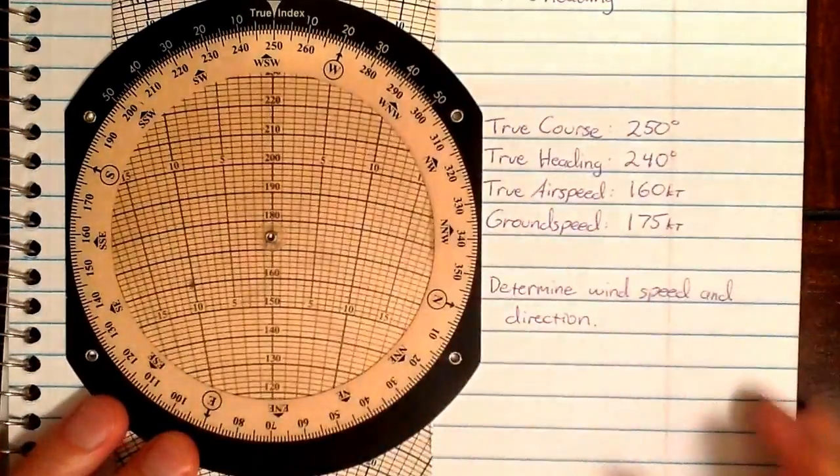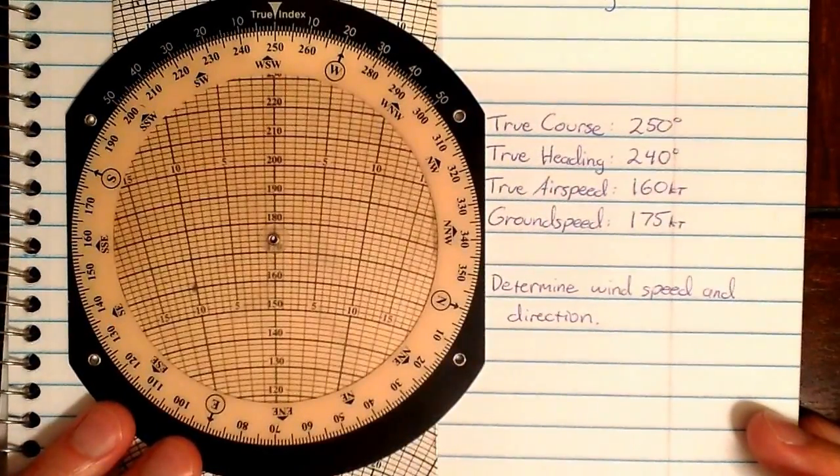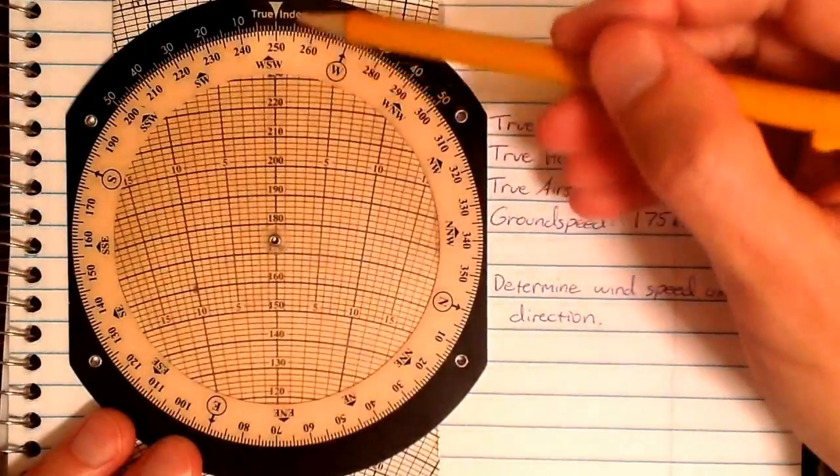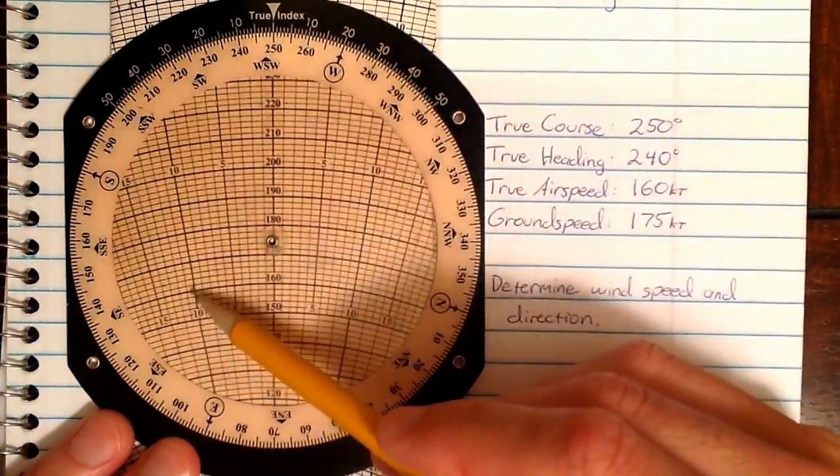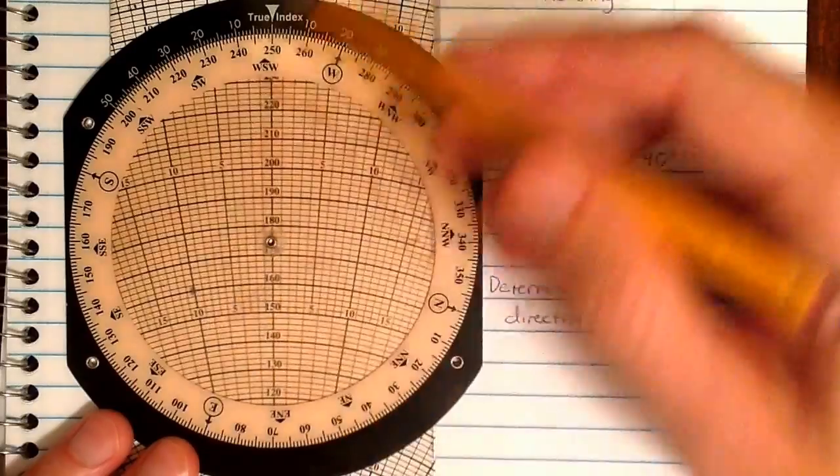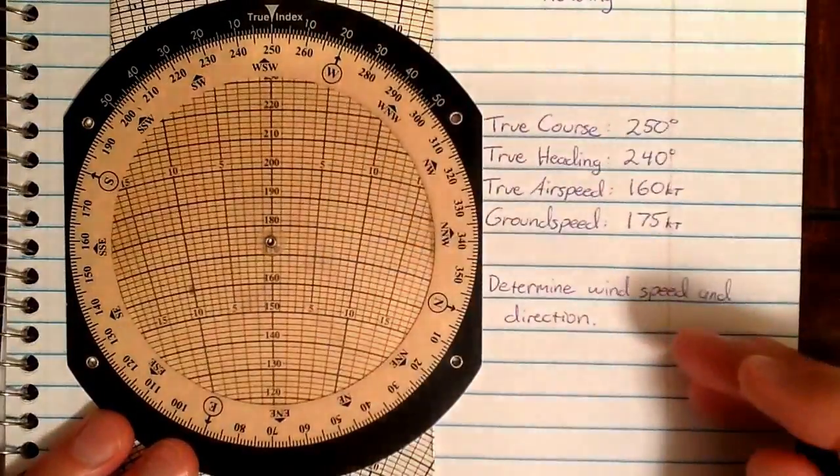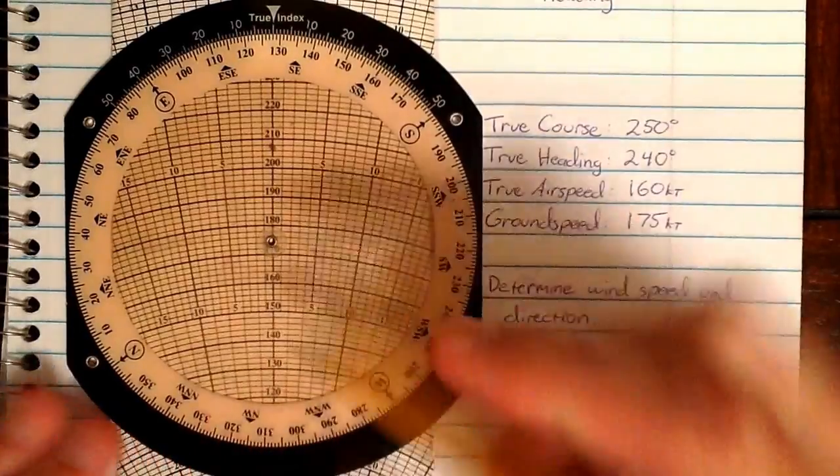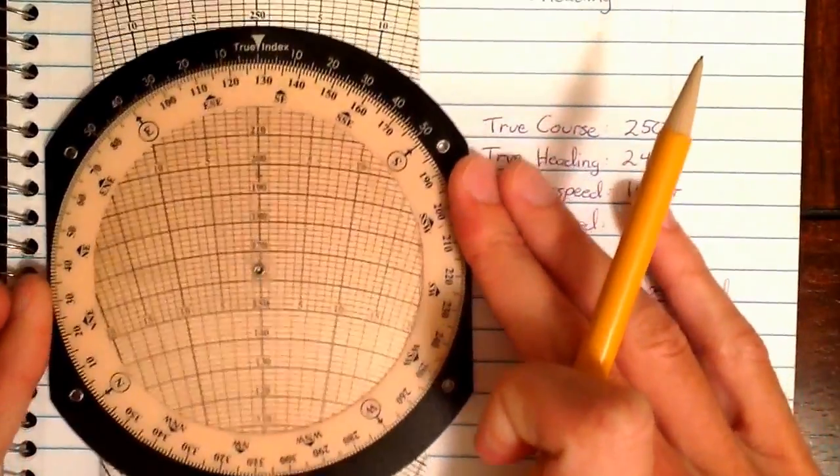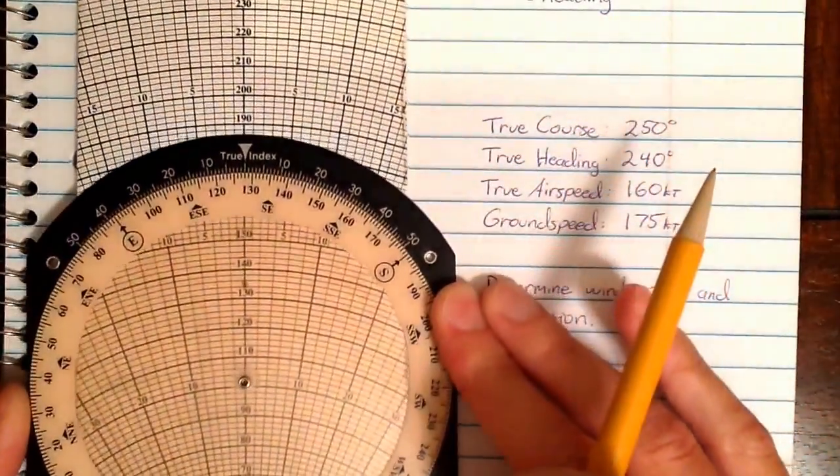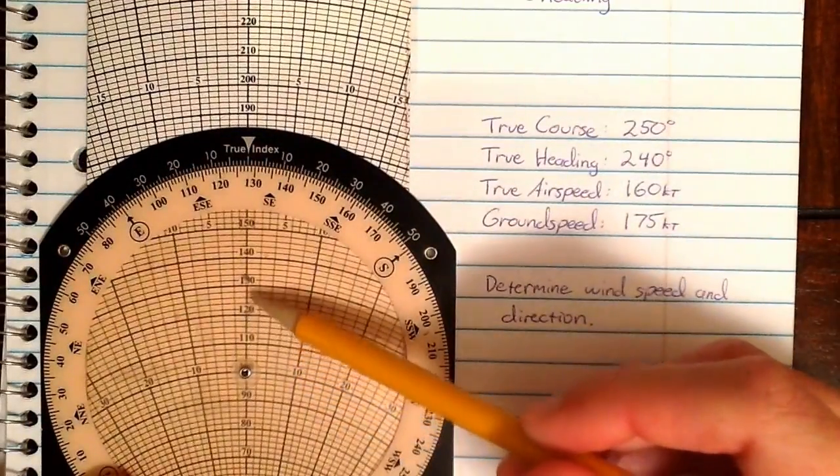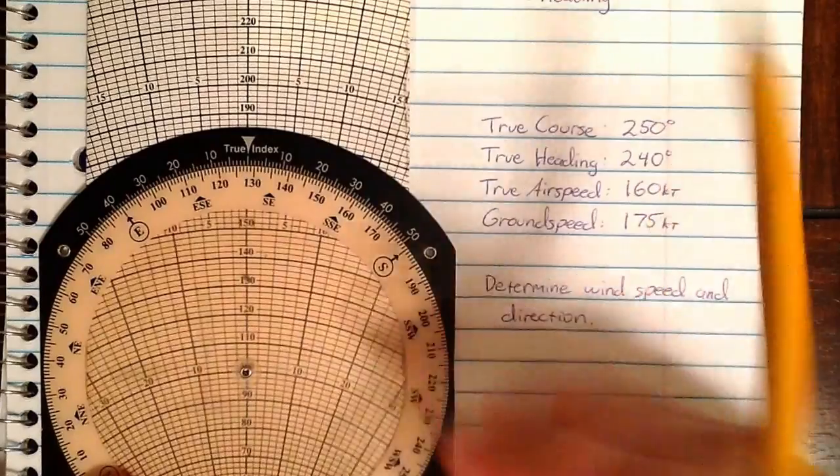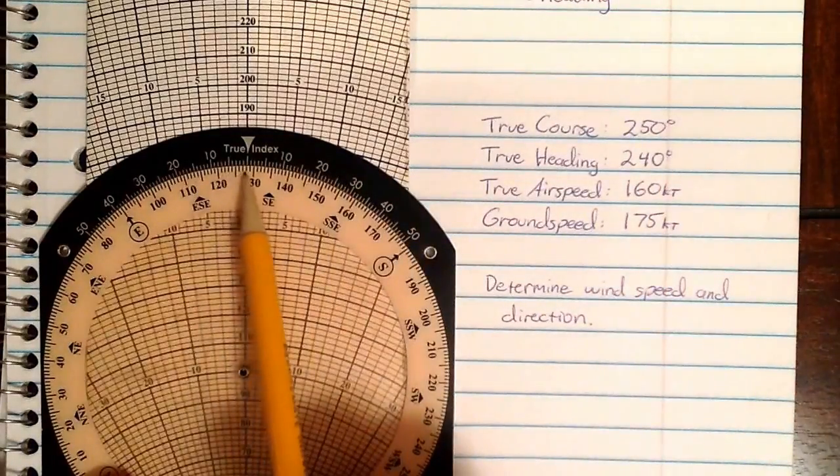Now the card is configured in airplane mode, so we can rotate it around into wind mode. Again, wind mode simply being the wind direction will be found at the top when the airspeed dot is over the center line. So as I rotate this to be over the center line, and then I move my card for a convenient count up from the grommet. I can see that I have 10, 20, 32 knots of wind, and the wind direction is 128 degrees.